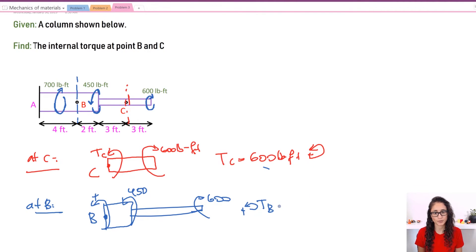So I have TB, so I have plus 450 because it's going the same direction, right? And I have minus 600. This equals zero. So TB, which is this way, is going to equal 600 minus 450, which equals 150 pounds-foot.